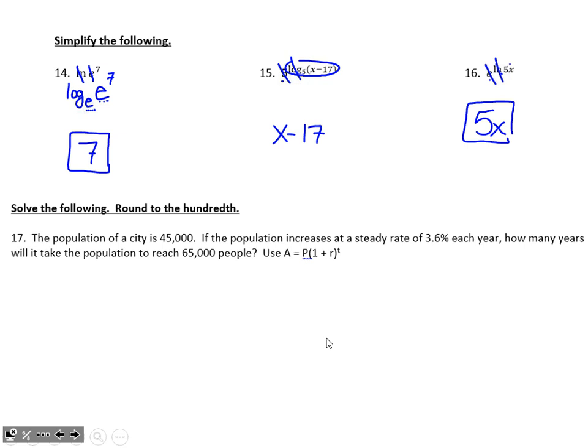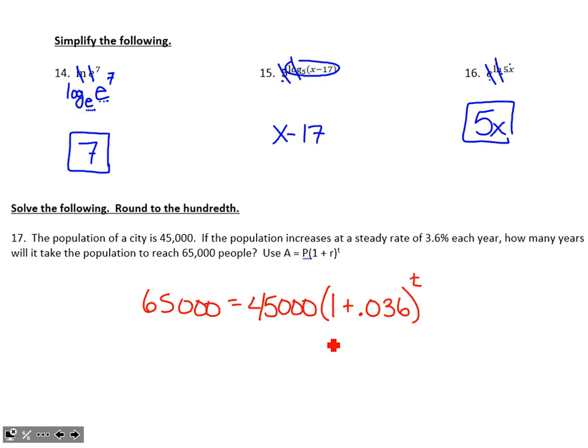Now the calculator portion — solving exponential word problems. Number 17: the population of a city is 45,000. If the population increases at a steady rate of 3.6% each year, how many years will it take to reach 65,000? Using the provided formula, the final amount 65,000 equals the initial amount 45,000 times (1 plus 0.036) to the t power. We don't need to memorize the formula — we just need to use it correctly.